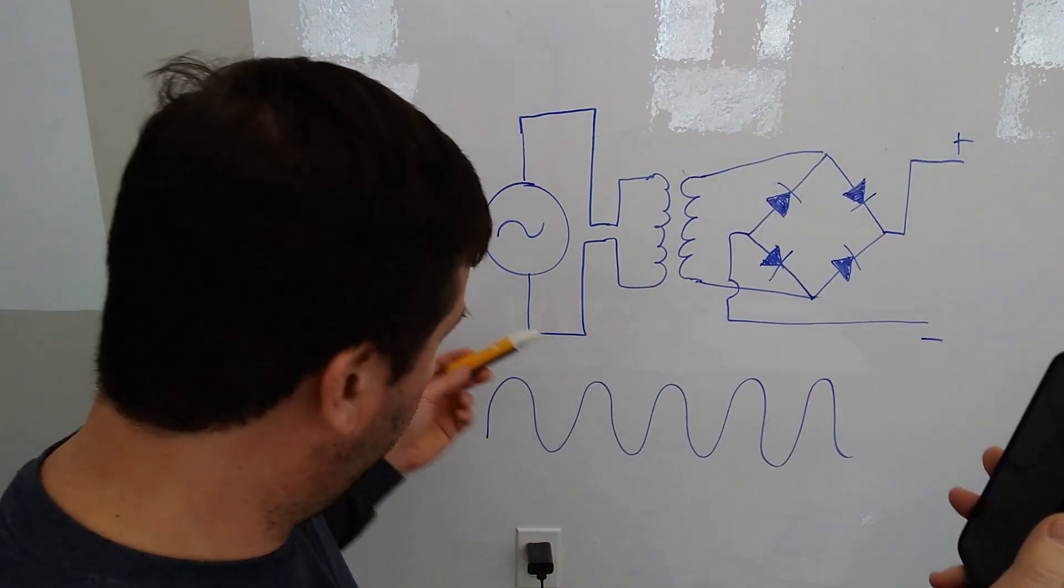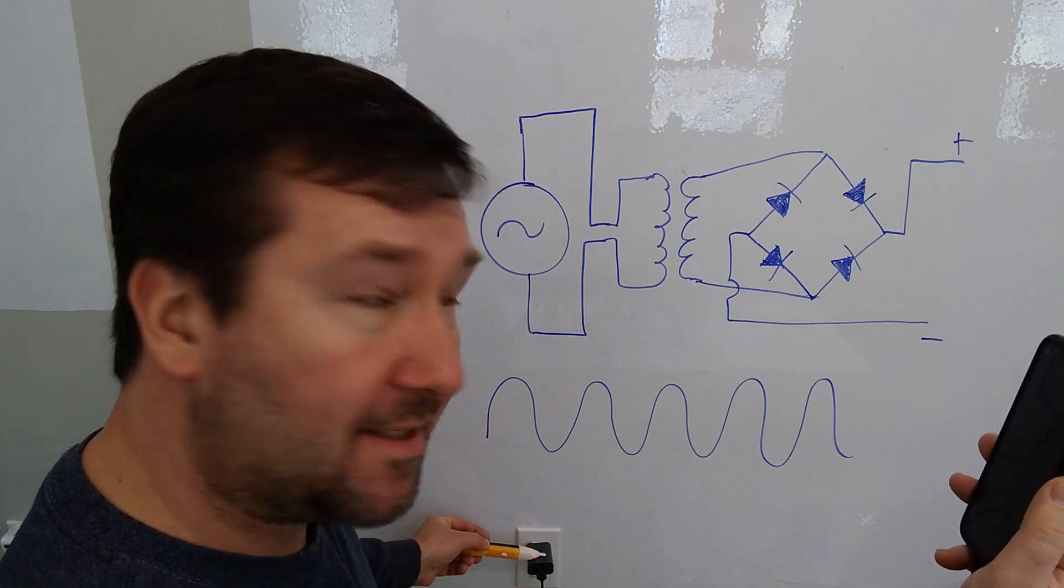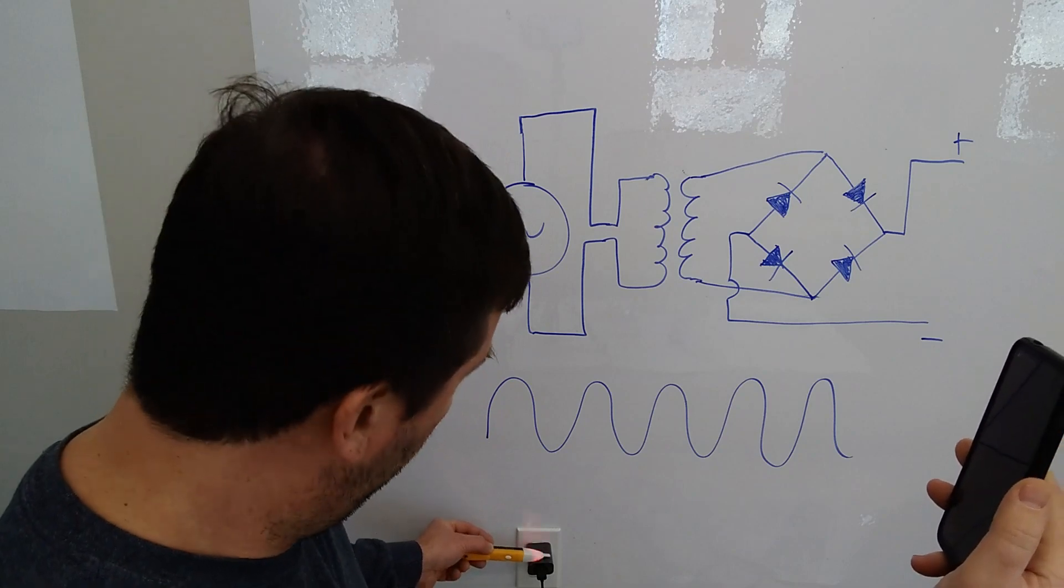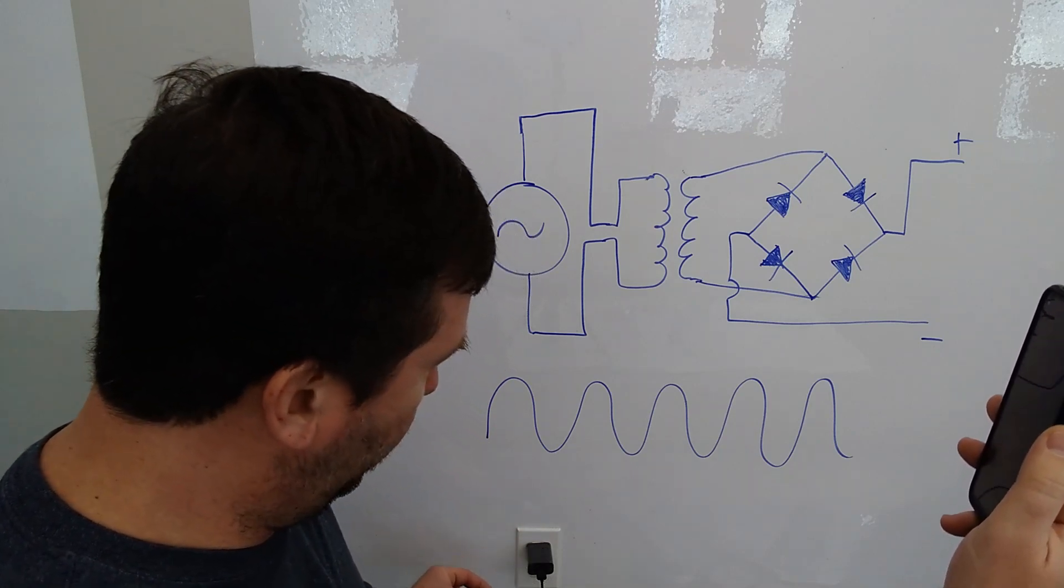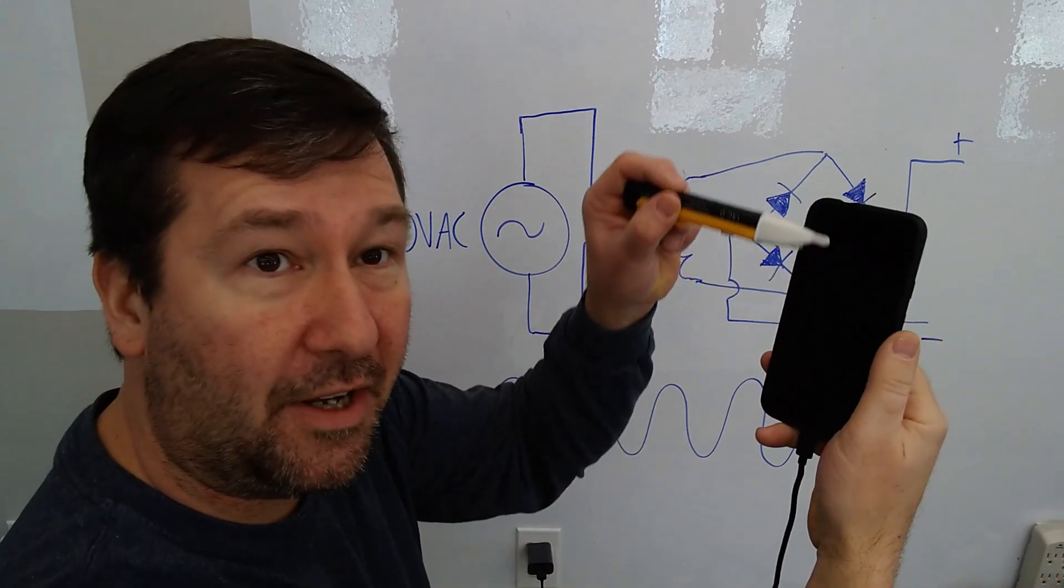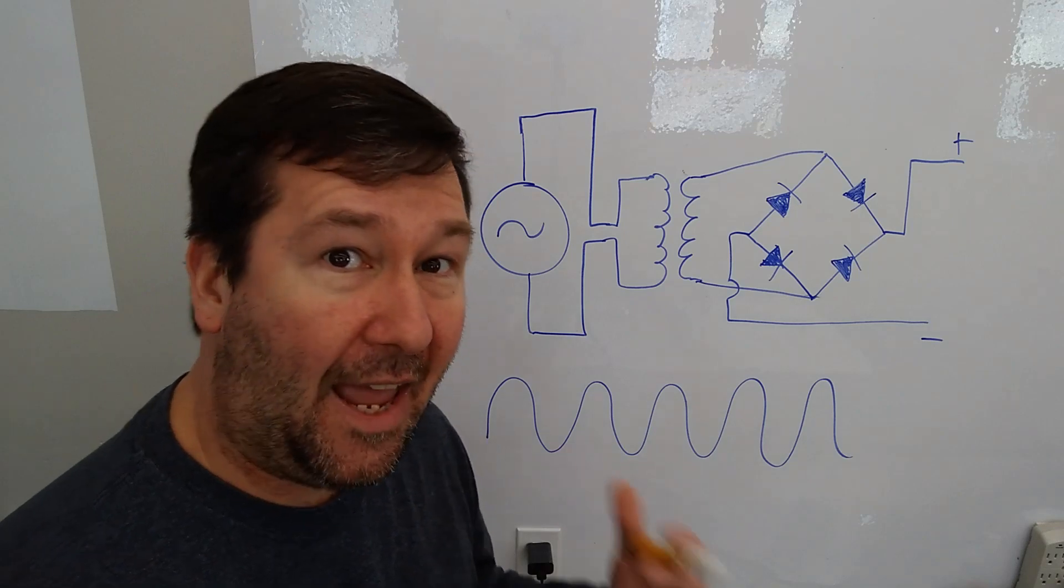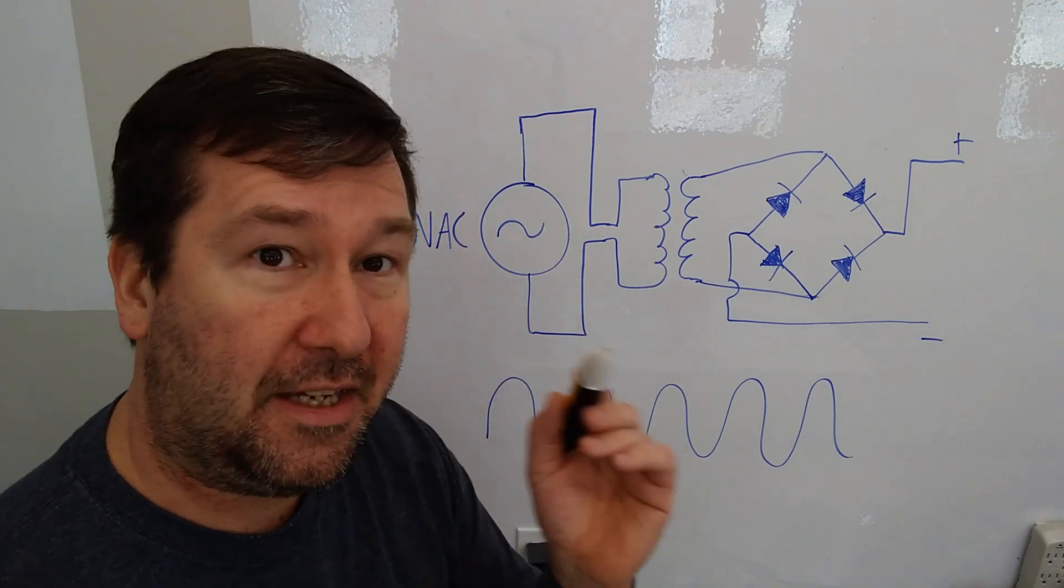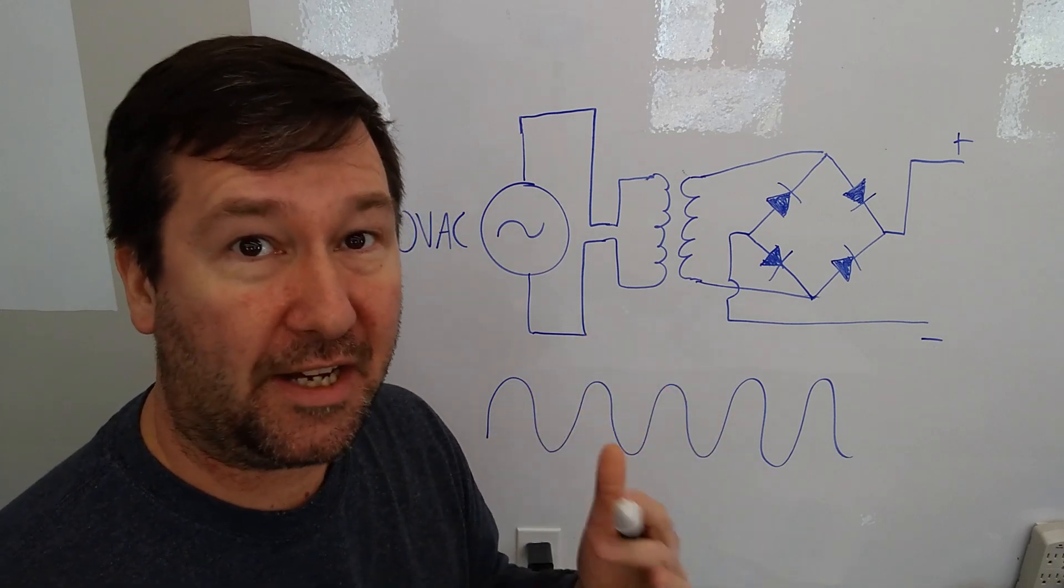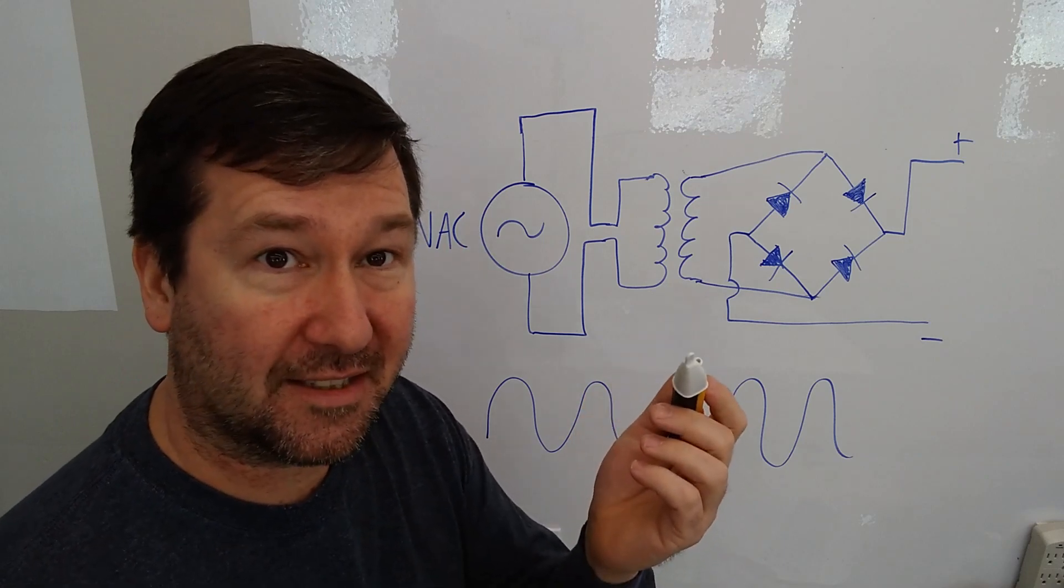But if I take my non-contact voltage sensor and touch, then I will probably find some spot on my adapter that'll beep. But if I move to my cord, I don't get any beeps. And if I go to my phone, I don't get any beeps.